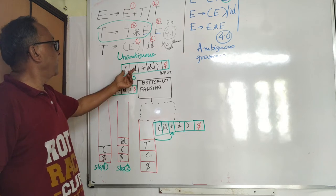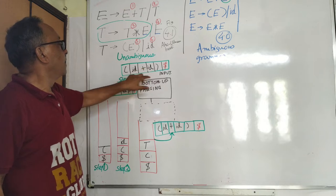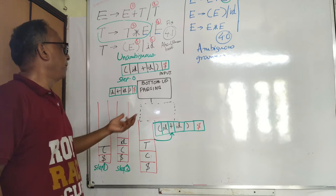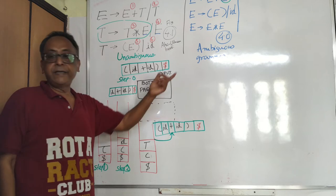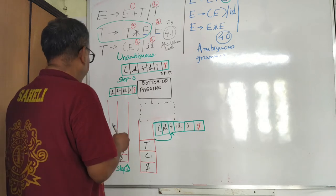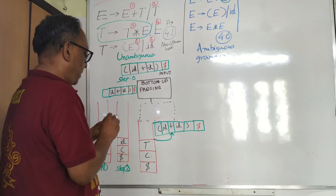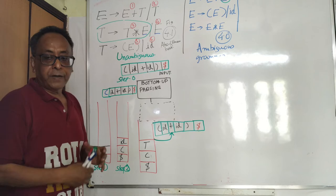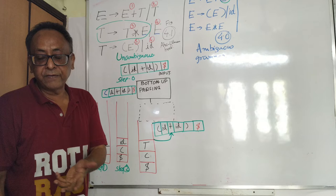Here is a sample string: opening bracket, id, plus, id — these are all terminals. Opening bracket, close bracket, and dollar is the end-of-input marker. This is the bottom-up parsing program. In top-down parsing, the stack should start with S, but in bottom-up parsing the stack should start empty.